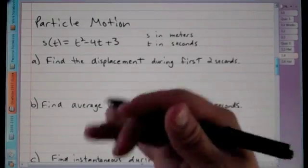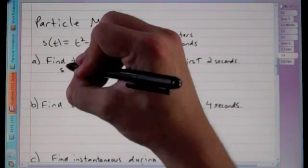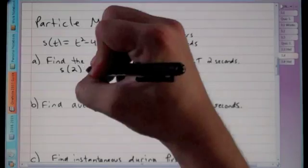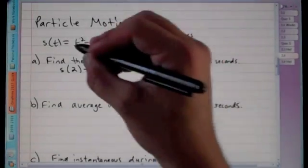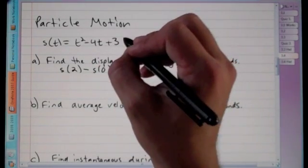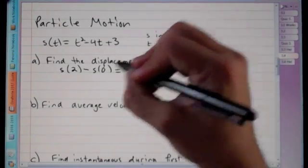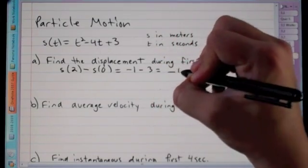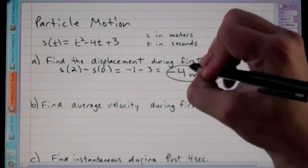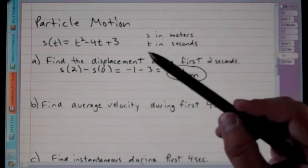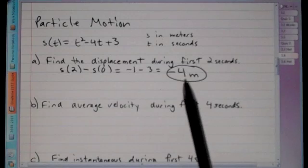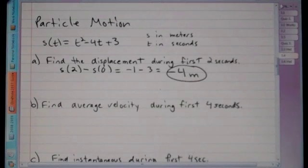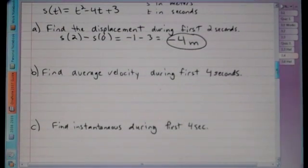To find displacement during the first two seconds, we compute s(2) − s(0). Plugging in: s(2) = 4 − 8 + 3 = −1, and s(0) = 3. So displacement = −1 − 3 = −4 meters. Displacement measures how far from the starting point you are, not total distance traveled.